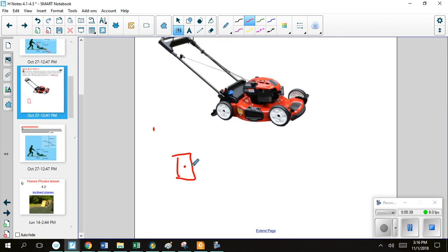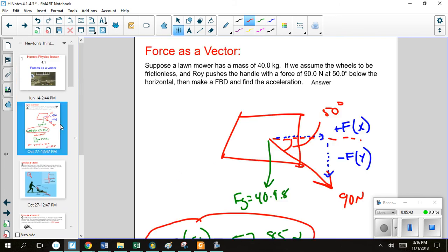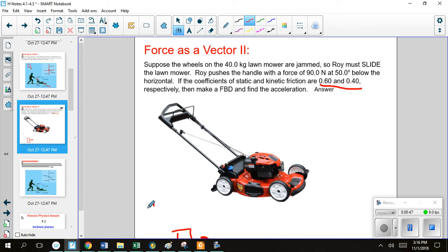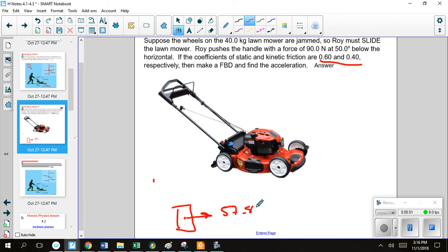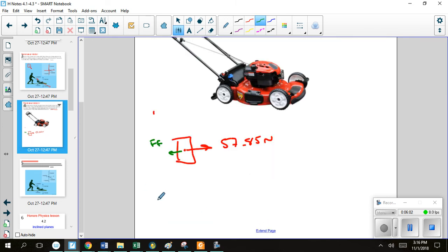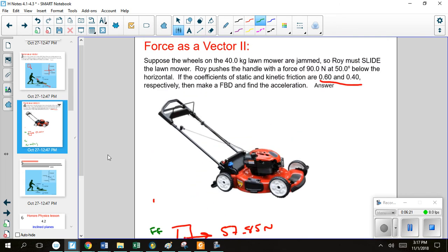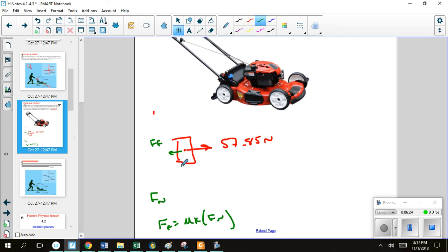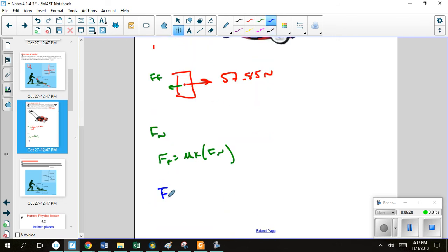So free body diagram, we still have that, what was it, 57.85 newtons going that way. Only now we're going to resist some motion over here. Alright, that's going to be our force of friction. And in order to find that, we need to figure out our normal force. Because the force of friction equals our coefficient of friction times the normal force. And what we really should do is see if it moves even to begin with. So this is kind of a test run with our static, so that force of friction should equal the coefficient of static friction times the normal force.